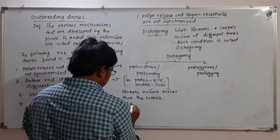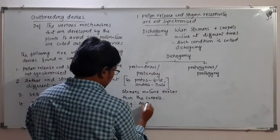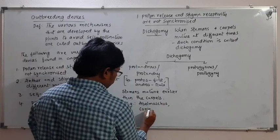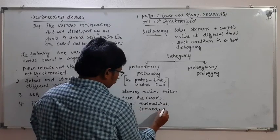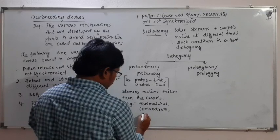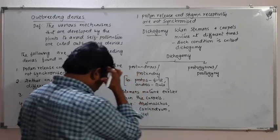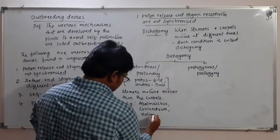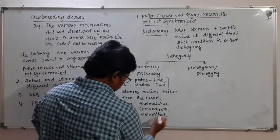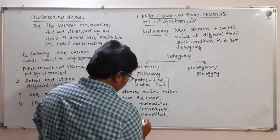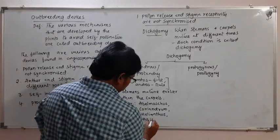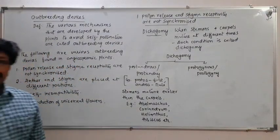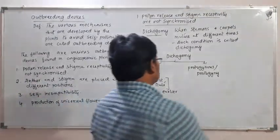Examples of protandry include apple, Coriandrum, Helianthus, and Hibiscus. In these plants you may find the protandrous condition.